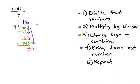And then we would repeat the process again. 4 goes into 31 seven times. 4 times 7 is 28. We would then change the sign on the 28 and combine to get 3. And if there's nothing else to bring down, we would say that there is a remainder of 3.